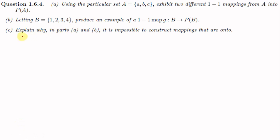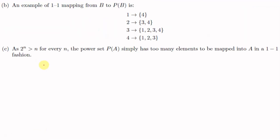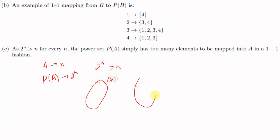For Part C, we explain why in Parts A and B it is impossible to construct mappings that are onto. We know that if A has n elements then P(A) has 2^n elements, and 2^n is far greater than n. So when defining a function from A to P(A), the power set has far more elements than A, making it impossible to define a function from A to P(A) that is onto.